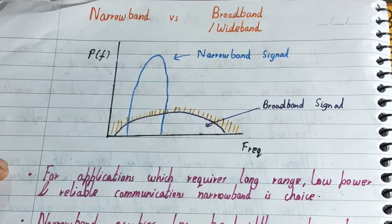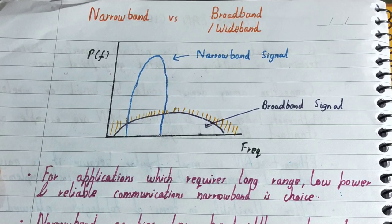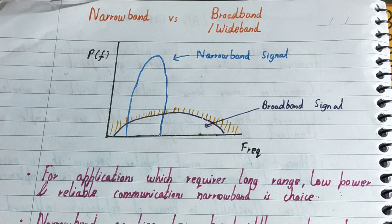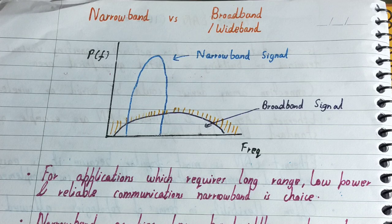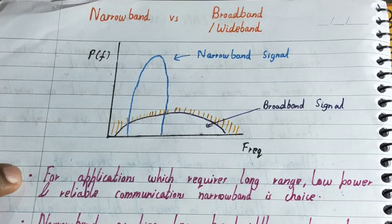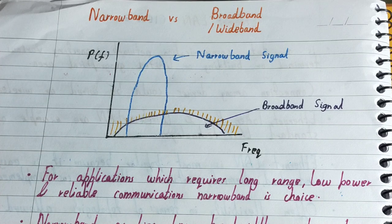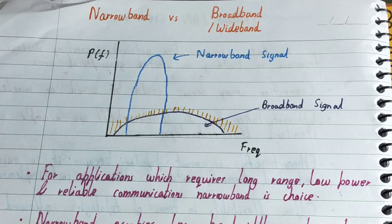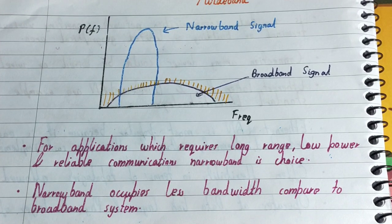For applications requiring long-range, lower power, and reliable communication, narrowband is the choice. When you want to transfer data over very long distances, narrowband works well because of the power and frequency characteristics it offers. It also enables low power consumption and reliable communication.